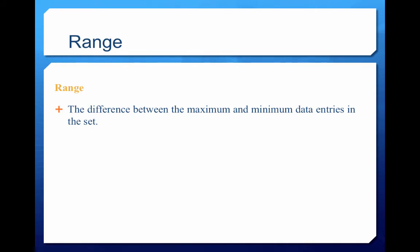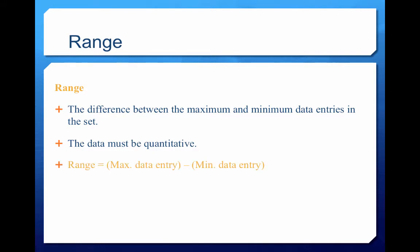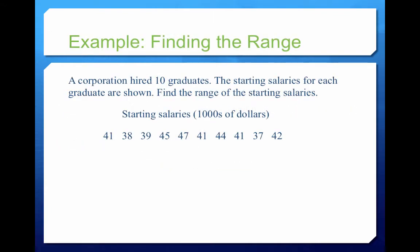The range is probably the simplest measure to get — it's the difference between the maximum and minimum data entries. Your data has to be quantitative, meaning numerical. We're going to take our maximum value and subtract our minimum value to get our range.